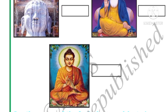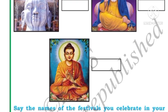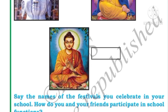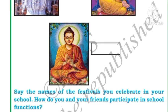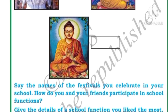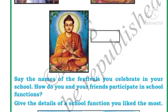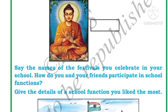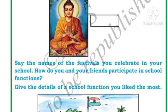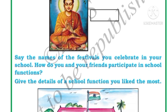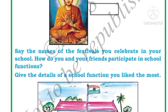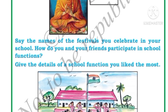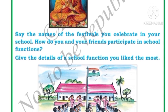Now say the names of the festivals you celebrate in school and how you and your friends participate in school functions. In school you celebrate Republic Day, Independence Day, and Gandhi Jayanti. Gandhi Jayanti is celebrated on the birthday of our father of the nation. Independence Day and Republic Day are celebrated by hoisting the flag. These are our national festivals — not only we, but all of India celebrates these three festivals. Religious festivals are celebrated by different religions, but national festivals are celebrated by everyone — Hindus, Muslims, Christians, Buddhists, Jains — all people of the nation celebrate Independence Day, Republic Day, and Gandhi Jayanti.